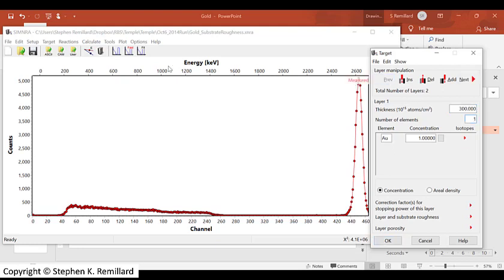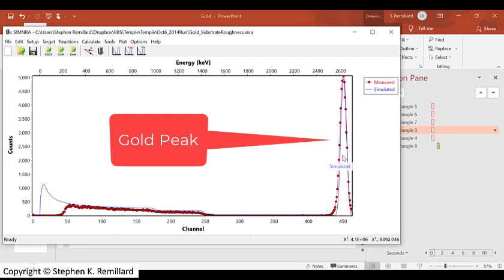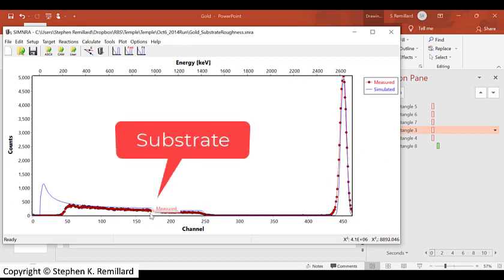We can go ahead and take a look at it by clicking fast to get a calculated spectrum, and we have the simulated spectrum in blue. It doesn't match very well. It's narrower than gold peak, so I'm going to have to increase the thickness a little bit.